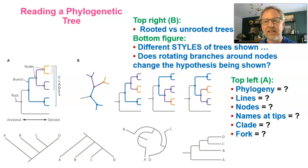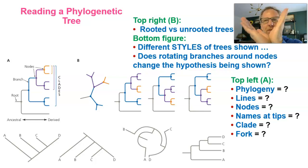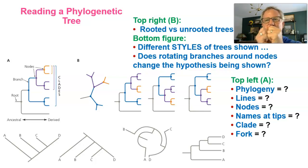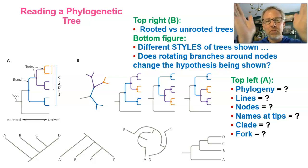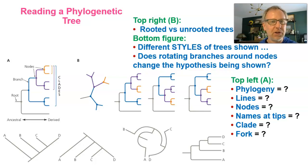Another question: what do the forks represent? When you look at a node and then the branches coming from it, that fork represents a speciation event — that ancestor has split into two different lineages. Those two independently evolving lineages would represent different species. So the fork represents the origin or formation of new species. Make sure you understand the parts of a cladogram and how to interpret them.